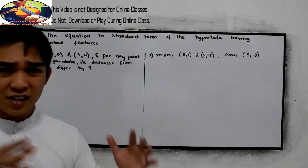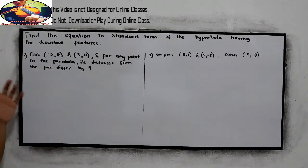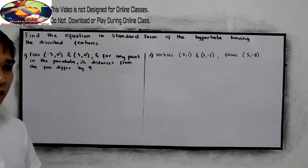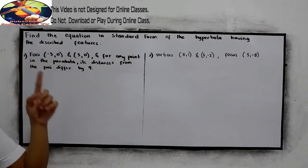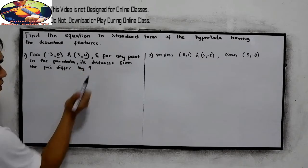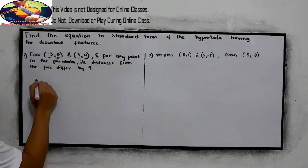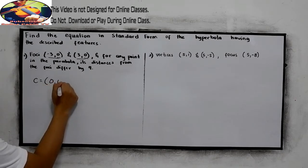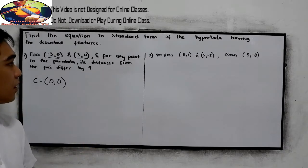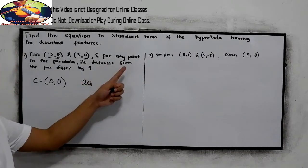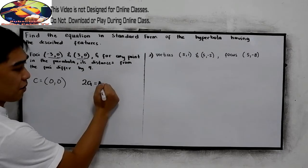So let's first solve example number one. Foci are (-3, 0) and (3, 0). Going back to our examples and examining the foci, notice that the y-coordinates are 0. So we know the center is (0, 0). And in our introduction to hyperbola, we know that 2a is the distance of the parabola from the foci. In this case, they differ by 4, so 2a is equal to 4.